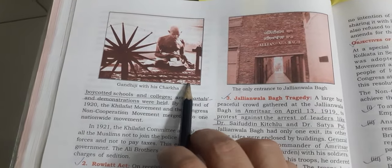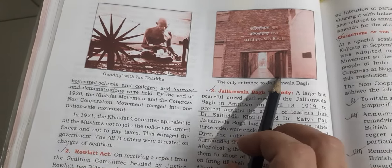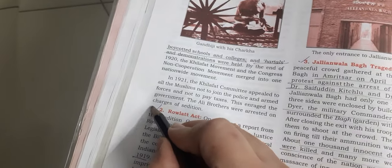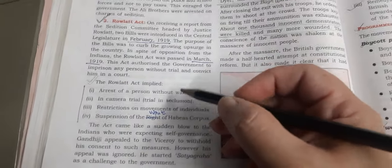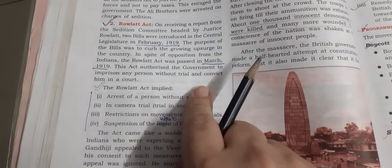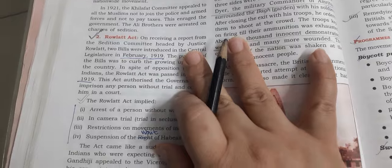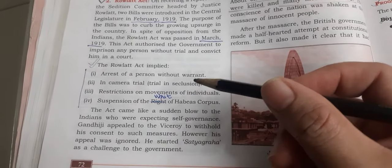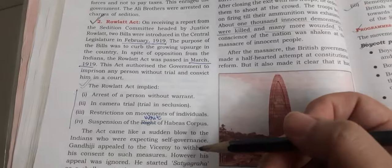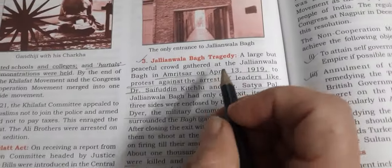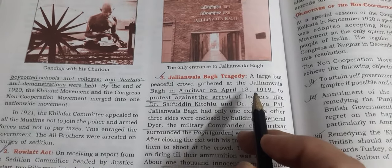On the next page, be able to recognize the picture of Gandhiji with the Charkha and the entrance to Jallianwala Bagh. Continue with the causes of the Non-Cooperation Movement. The second cause is the Rowlatt Act — it's in the syllabus and was asked in the sample paper. Know what the clauses implied and what they did not. Be well versed with your lesson, focusing only on the syllabus portion.